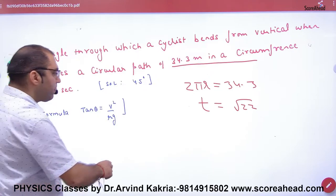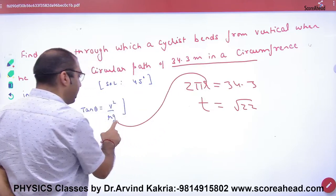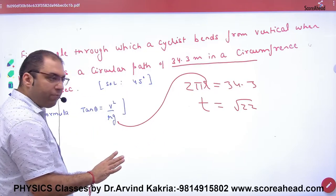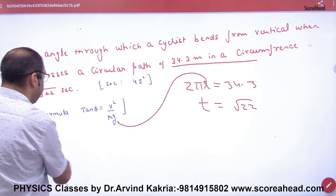So, tan theta v squared by rg. Inside this, you will know R to get here, you will know this. Do you know what will I do? You will know velocity.